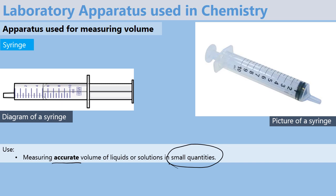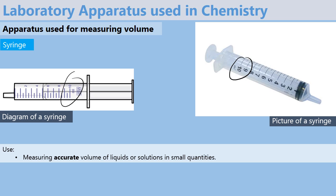We have syringes that are big and can measure up to even 100 milliliters. For instance, this picture of a syringe here can measure accurately between 0 and 10 milliliters. The same applies to the diagram — the diagram represents a syringe that can measure up to 10 milliliters.